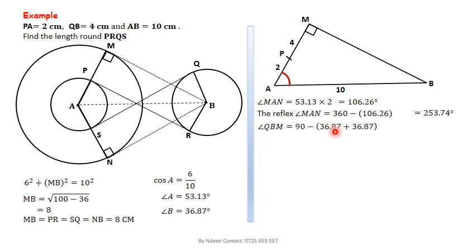And that means that RBN is also 16.26 degrees. Therefore, the obtuse angle QBR should be the sum of 16.26 plus itself plus that 36.87 plus that 36.87, which is 106.26 degrees. And therefore, the reflex angle QBR is 360 minus that figure, which is 253.74 degrees.